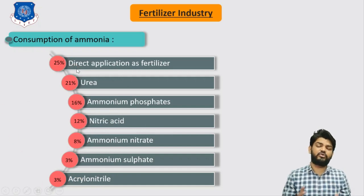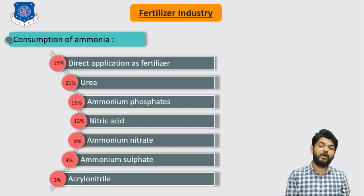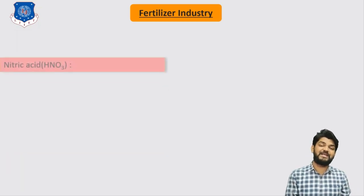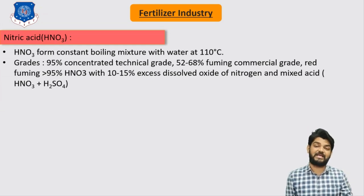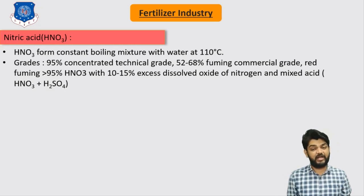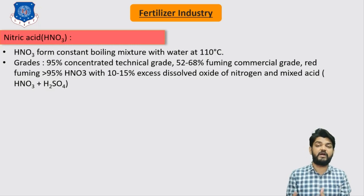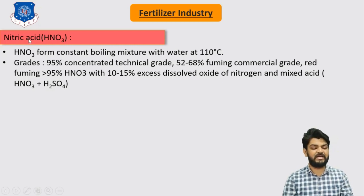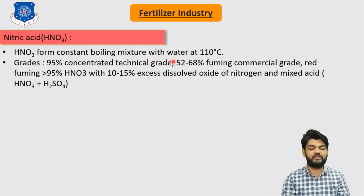This concludes the topic of ammonia in fertilizer industries. We now move to the next product — nitric acid, which is also a very important chemical used across many industries. Nitric acid is available in different forms and forms a constant boiling point azeotrope with water at 110°C.